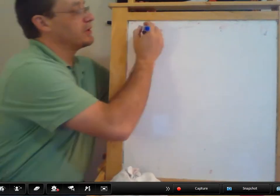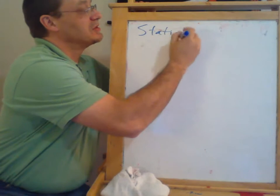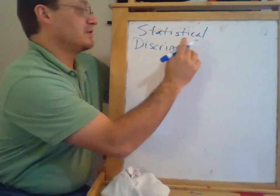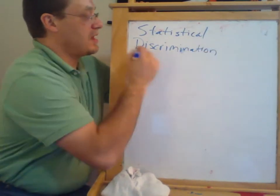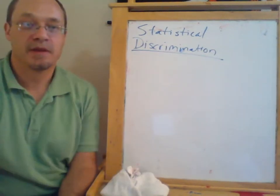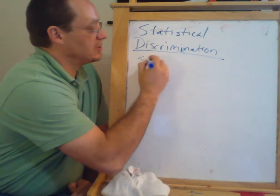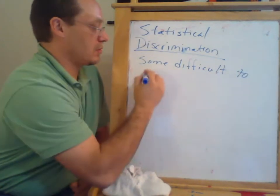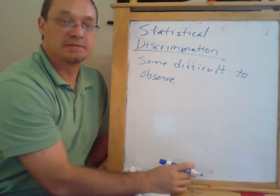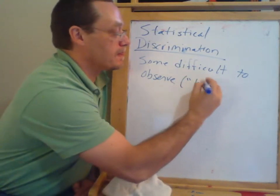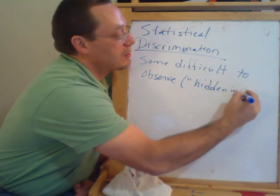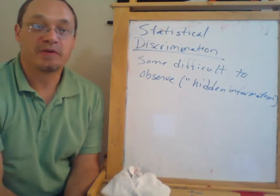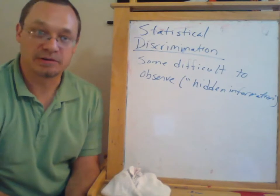Now we're going to talk about what's called statistical discrimination. The issue of statistical discrimination goes something like this: there is some difficult-to-observe trait, or hidden trait — hidden information, we sometimes call it — that people believe is correlated with some easy-to-observe trait.